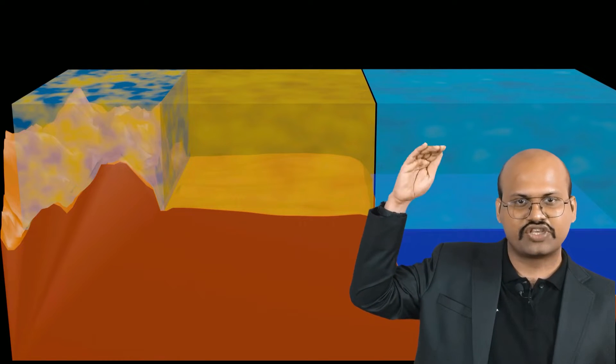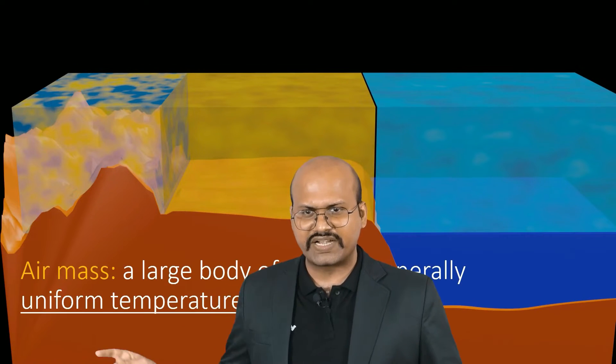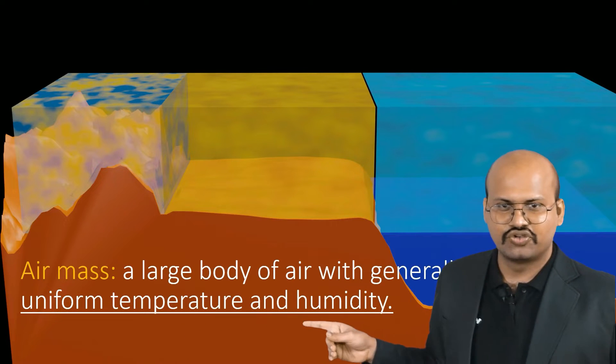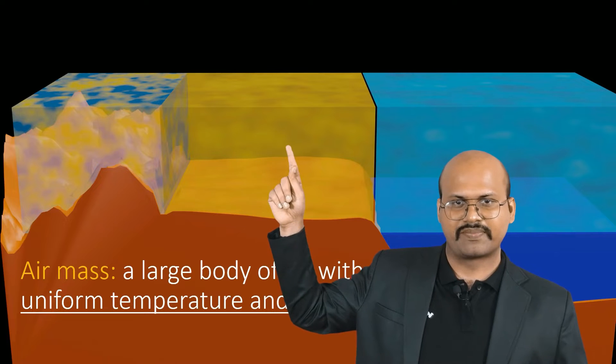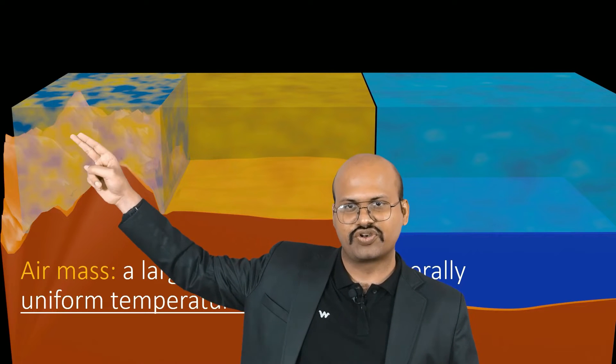The air column above the plain region has uniform temperature and humidity because it acquired its characteristics from that plain region. Similarly, the air column above the oceans has uniform characteristics acquired from the ocean. But over the mountains, the air column does not have uniform temperature or humidity, because the mountains themselves have different temperatures across valleys and peaks. By definition, an air mass is a large body of air which generally has uniform temperature and humidity.